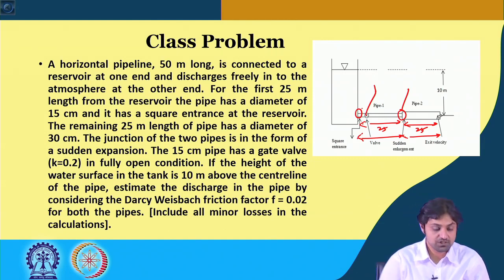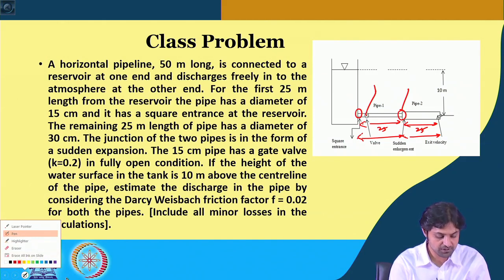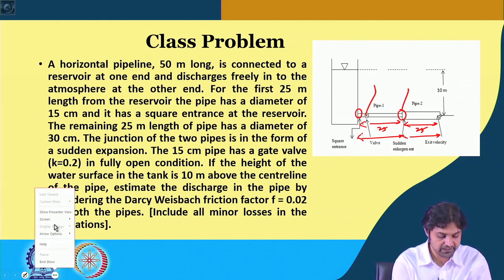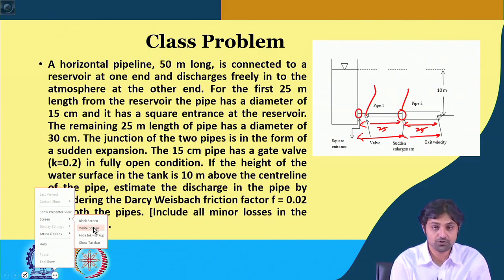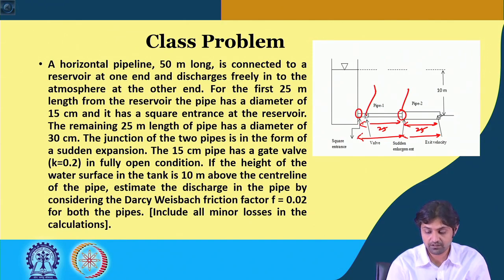Normally, I give this question in the class test or exam for my B.Tech second year students. I am going to solve this now — it might be a little lengthy problem, but it is important for you to follow. You should remember that our pipe is connected to the reservoir; this is the square entrance, this is the valve, this is the sudden enlargement, and there is an exit.